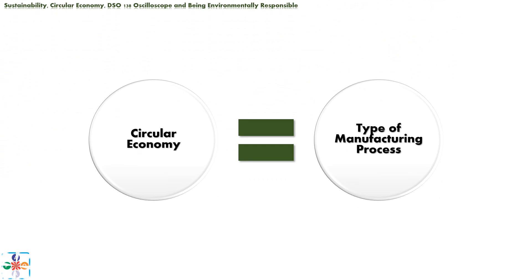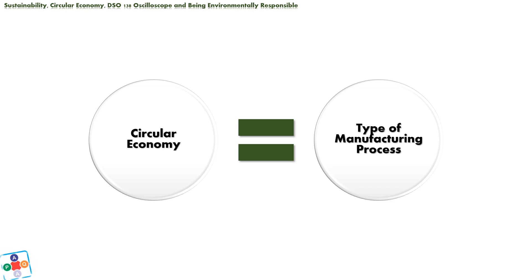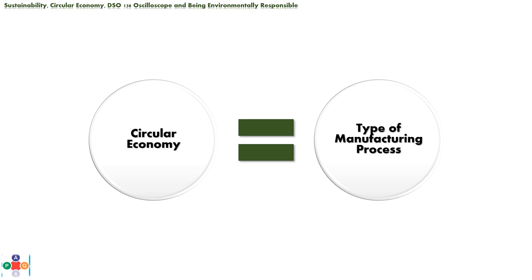Unlike sustainability, which is somewhat of a complex and comprehensive term, circular economy is a very specific and easy term to define. Surprisingly enough, circular economy has nothing to do with anything going around in circles or being repetitive — it is just one more example of poor naming practices. At its core, circular economy is a type of manufacturing process, and believe it or not, it has been with us for a long, long period of time, in one form or another. Now, let's see where the difference lies between regular and circular economy-oriented manufacturing processes.